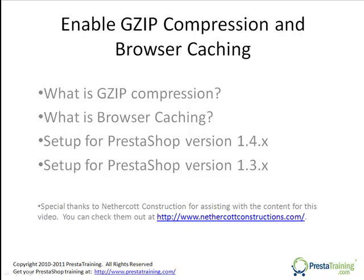One of the performance enhancing methods that we can use is gzip compression, and another is browser caching. Browser caching includes a couple different things, which is turning on some settings to cache your scripts, files, or images, and another is working with eTags, and we'll get to that in a little bit.